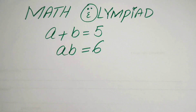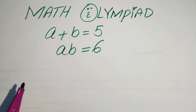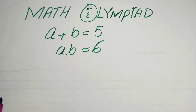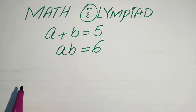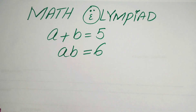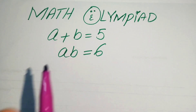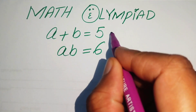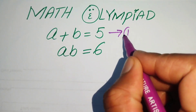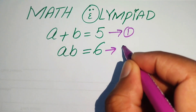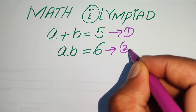Hello everyone, welcome. We will solve this math Olympiad algebra problem where a plus b equals 5 and ab equals 6, solving for the values of a and b. We call these equation number 1 and equation number 2.